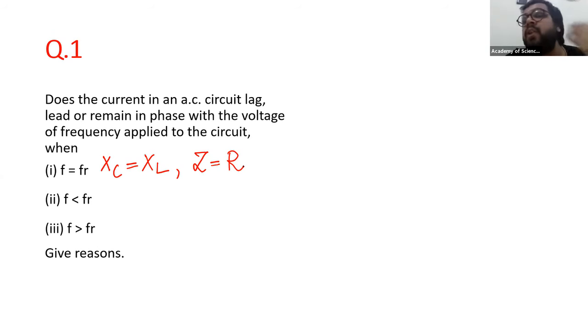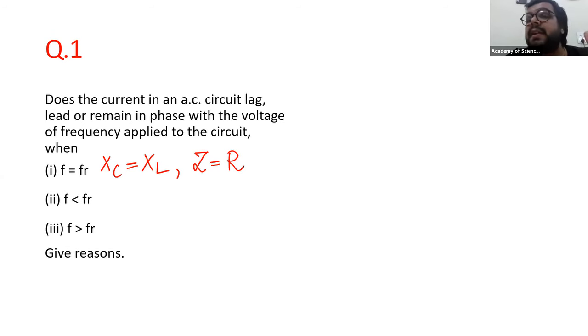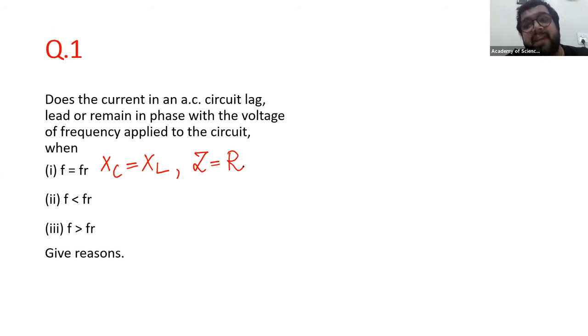We all know that in a purely resistive circuit, voltage and current are in the same phase. There is no phase difference — they are in the same phase with each other.